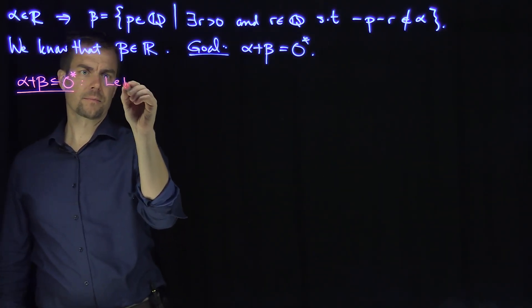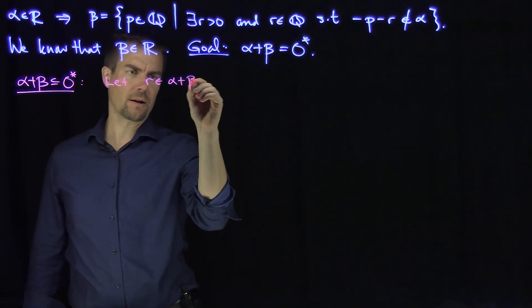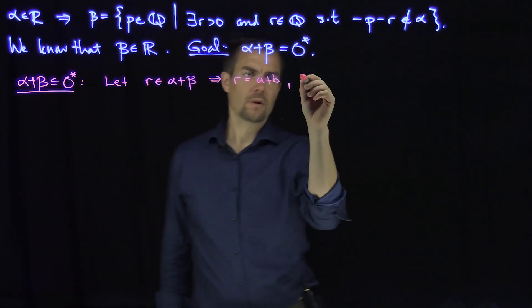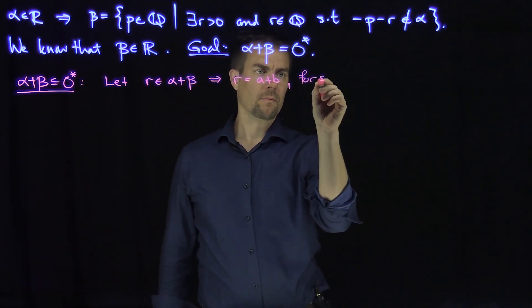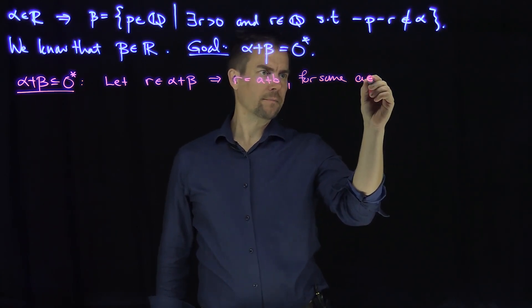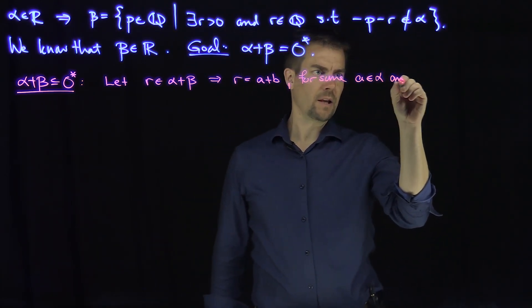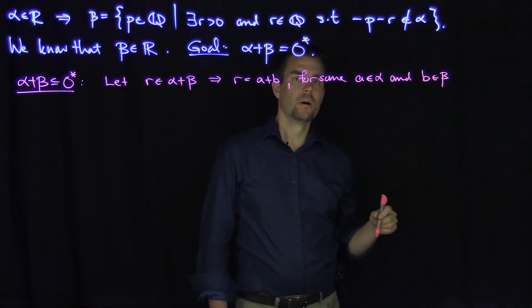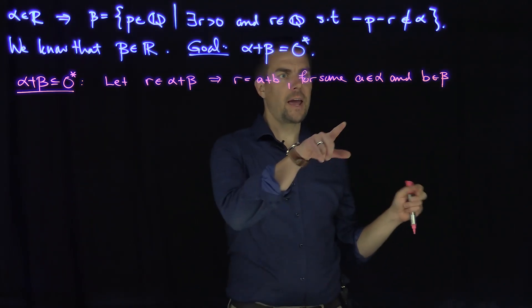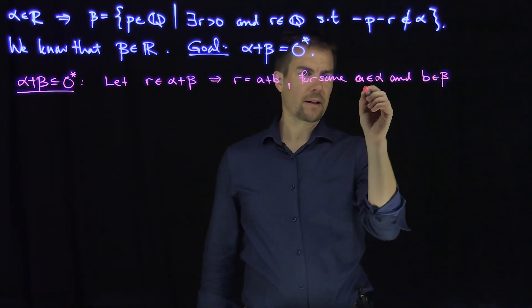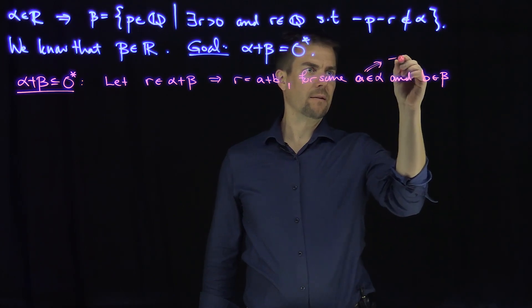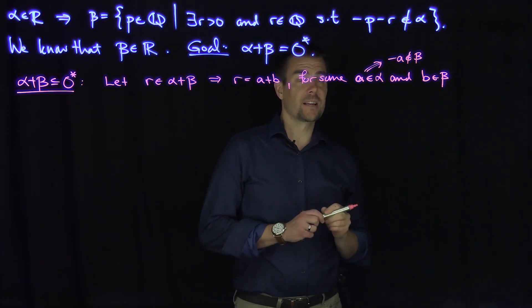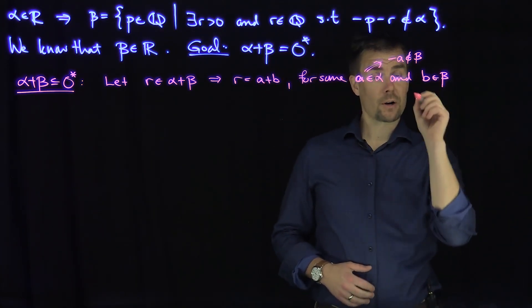So how do we do this? Let r be in alpha plus beta. This implies that r is equal to a plus b for some a in alpha and b in beta. But if a is in alpha, this implies that negative a is not in beta. And so since negative a is not in beta, that means that negative a is larger than b.